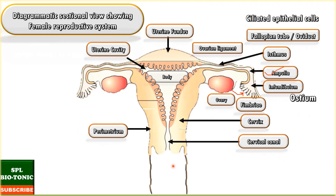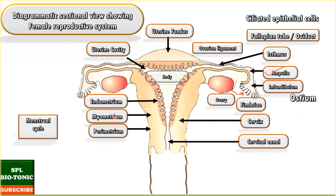Histologically, the uterus is made up of three layers: perimetrium, endometrium, and myometrium. Here, 'peri' means surrounding, 'myo' means muscles, and 'endo' means inside. So the outermost covering is the perimetrium. The middle muscular layer made up of smooth muscles is the myometrium, and the innermost layer is the endometrium. The endometrium is made up of stratified epithelial cells, which are also found in the epidermis of skin, the inner lining of the vagina and rectum. Please make a note of this.